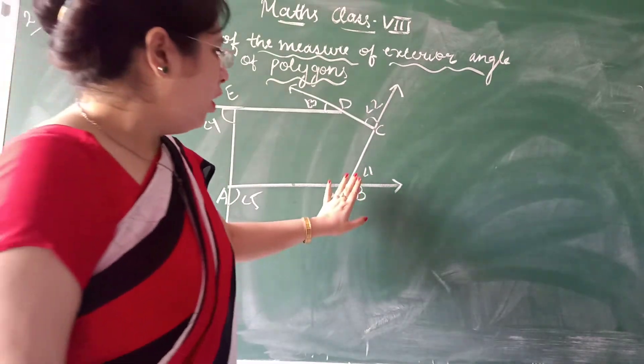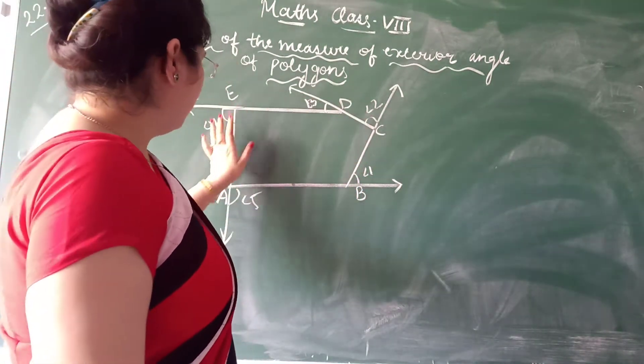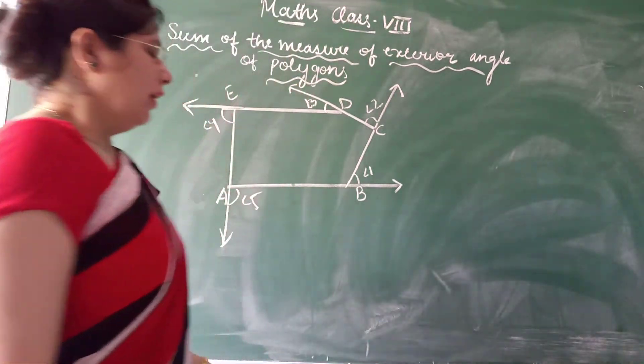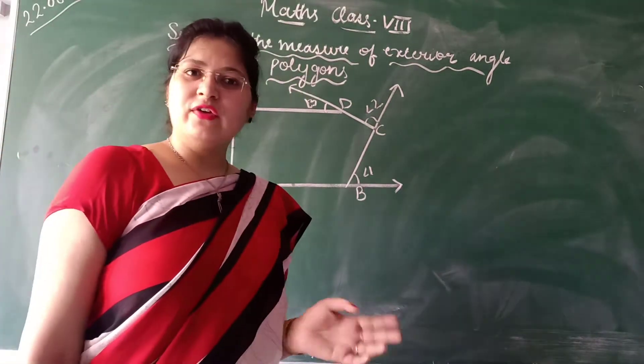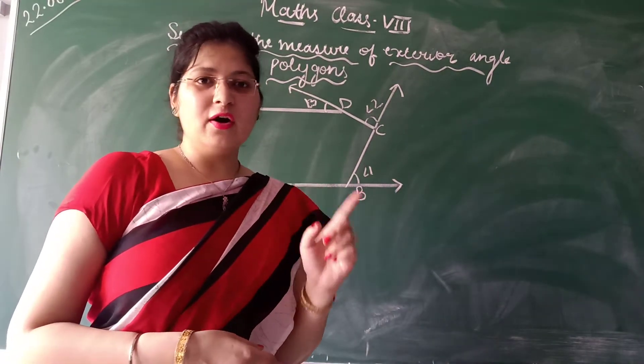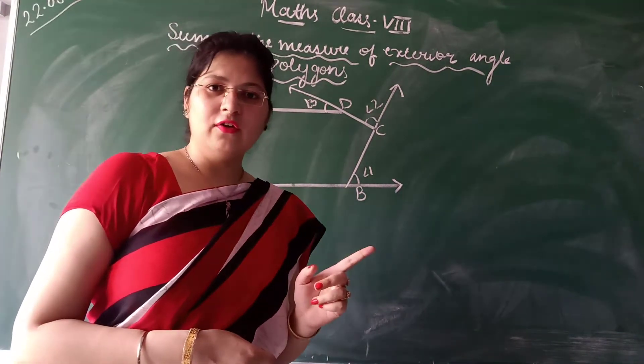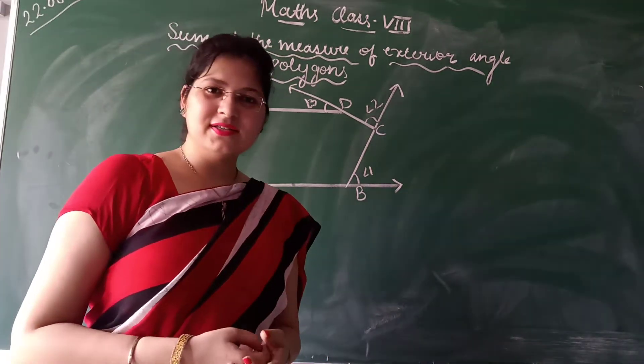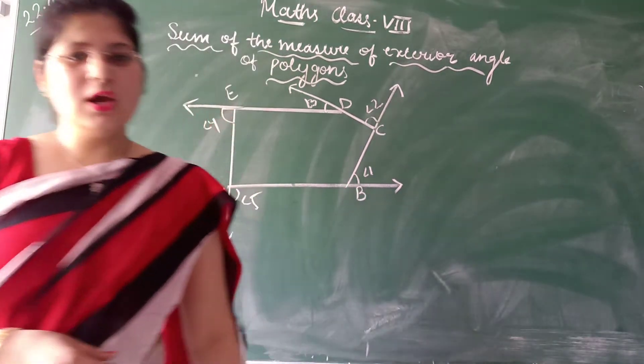That means when we add all these 1, 2, 3, 4 and 5, do we get 360 or not? Let's see. In question number 7 of exercise 2.1 we have done that sum of the measurement of the exterior angle of the triangle and quadrilateral is 360. So this is the pentagon. Let's see what we get in this.